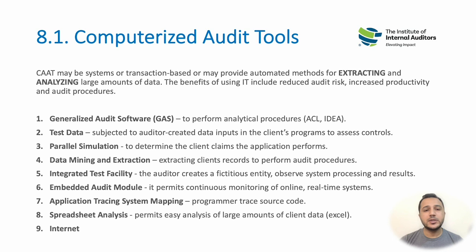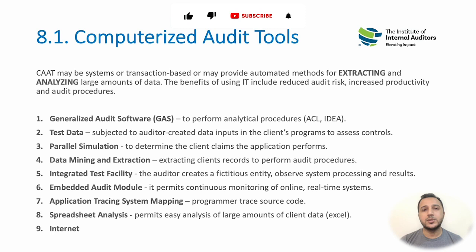Application tracing and system mapping is when an auditor, with the help of a programmer, reviews the source code of an application to ensure it has no loopholes or wrong formulas. Spreadsheet analysis covers any spreadsheet — Microsoft Excel, Google Sheets, or others — where we perform our review, analysis, and create our working papers.